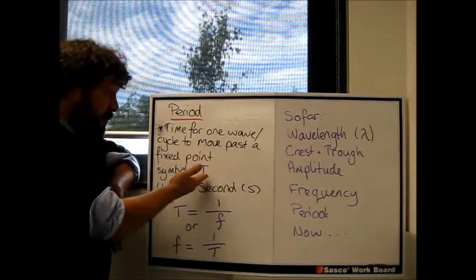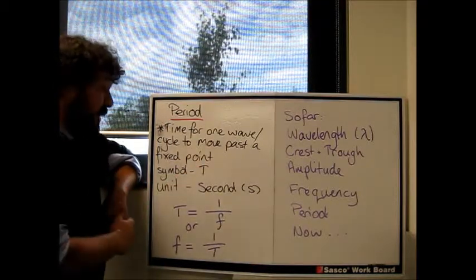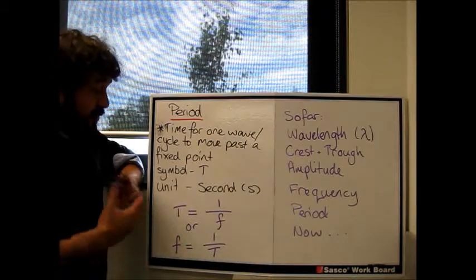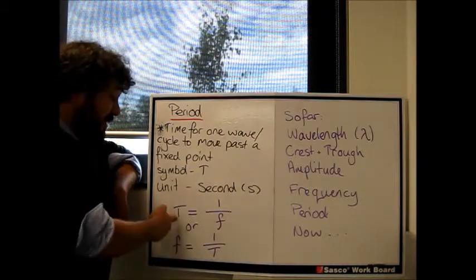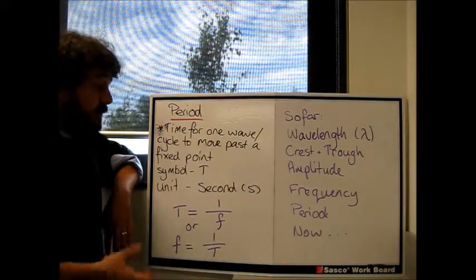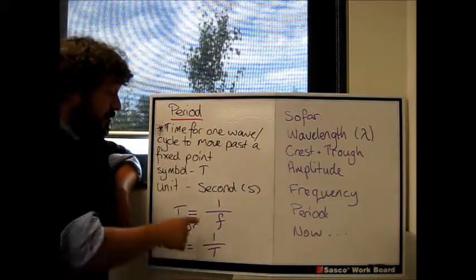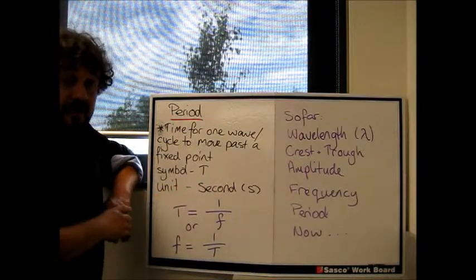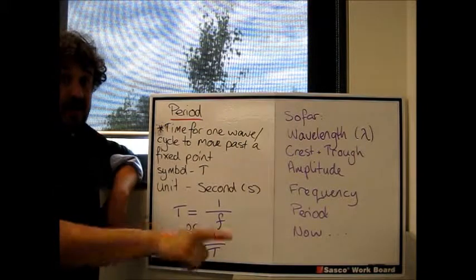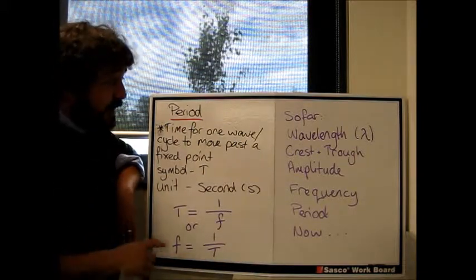So the symbol is a big T and the unit is seconds. Now there's a relationship between period and frequency. So T equals one over f. They're reciprocals, basically. So if you know the frequency, you can work out the period just by going one divided by the frequency. Or if you know the period, you can work out the frequency by one divided by the period.